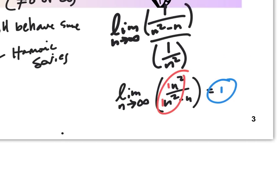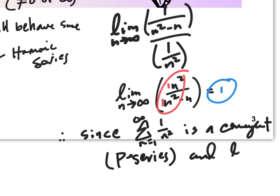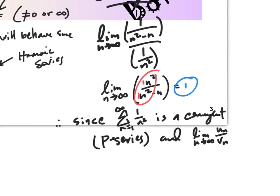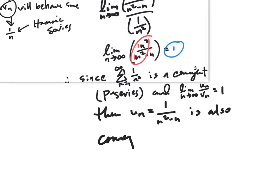Therefore, since the sum from n equals 1 to infinity of 1 over n squared is a convergent p-series, and the limit as n goes to infinity of u sub n over v sub n equals 1, then u sub n — which equals 1 over (n squared minus n) — is also convergent by the limit comparison test.